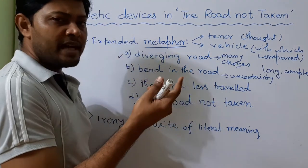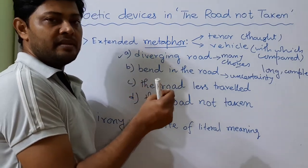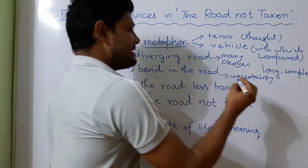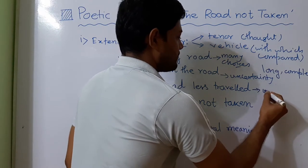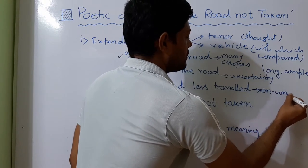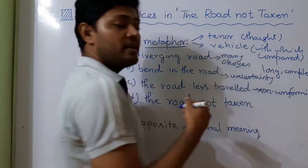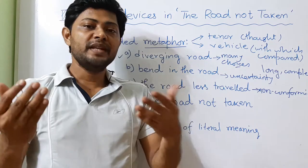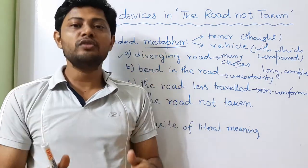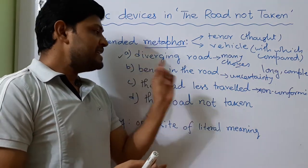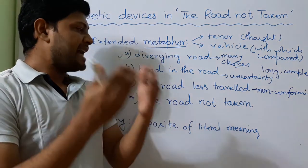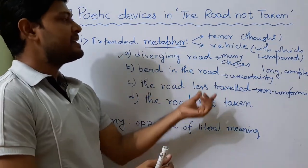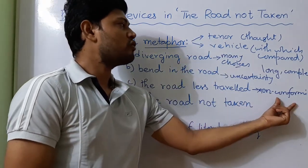The third symbol is the road less travelled. The speaker finally takes the decision to travel on the road which appears to be less travelled, and that symbolizes non-conformity — that means originality and individualness. The speaker likes to discover new things, wants to see the unseen, and wants to know the unknown. This spirit of individualism is symbolized by the road less travelled, which is the vehicle compared with non-conformity, the tenor.